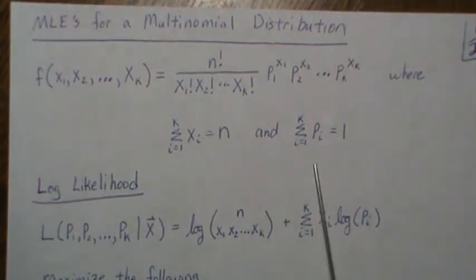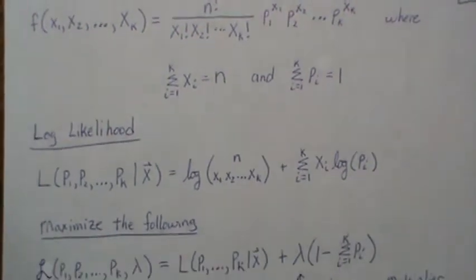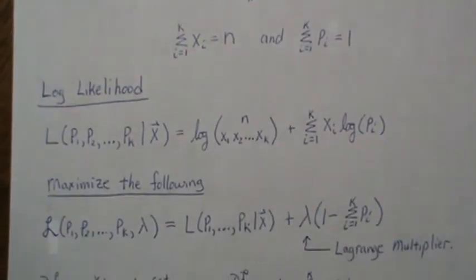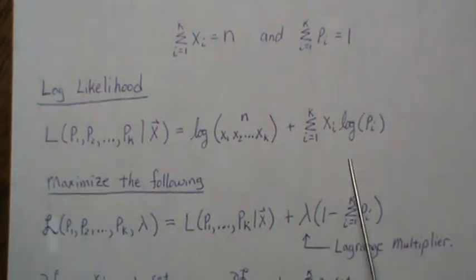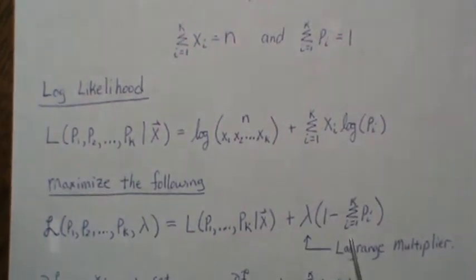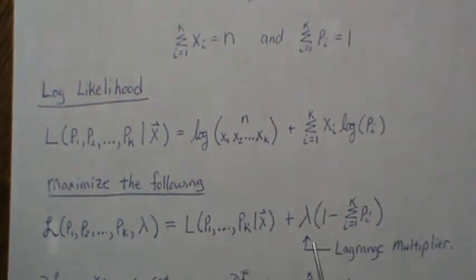Because there's a restriction we need to create a Lagrange multiplier and then maximize it. So this is the likelihood function, but then we create this lambda times our constraint, and now we have to maximize this function in order to find the maximum likelihood estimators under this constraint.